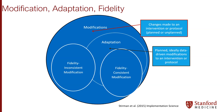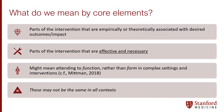Adaptations can be fidelity consistent or fidelity inconsistent. They can preserve those core elements or functions of the intervention, or they could remove or alter those in an important way. When we talk about core elements or functions, these are the parts that are empirically or theoretically associated with desired outcomes — the parts that are effective and necessary. These might actually take different forms as long as the function is preserved.